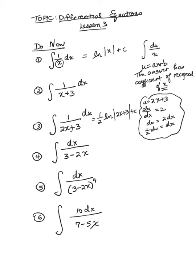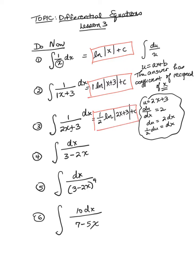We don't need to go through the u-substitution when u is linear. If u is not linear, we have to go through u-substitution. Looking at the second problem, the coefficient of x is 1, so its reciprocal is 1. The answer is just the natural log of x plus 3 plus c. For the next one, it's the natural log of the absolute value of 3 minus 2x plus c, but the coefficient is negative 2, so the reciprocal is negative one half. Don't forget this negative one half.